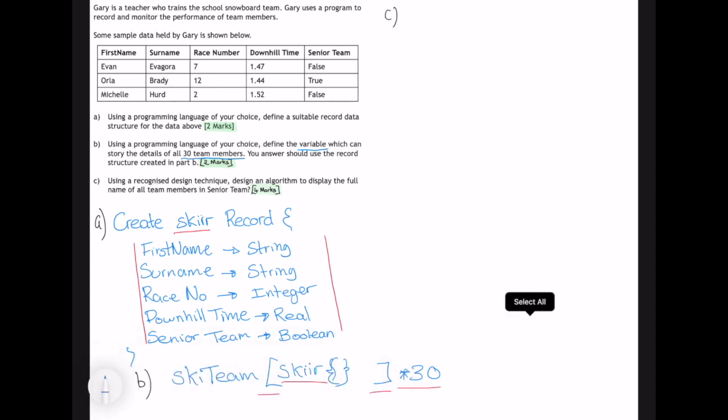Let's now move on to part C. In part C, we have to use a recognized design technique, probably pseudocode, to design an algorithm to display the full name of all team members in the senior team. This is a linear search where we're looking for all the players that are in the senior team. Because we don't know the number of players in the senior team, this is going to have to be a linear search that uses a fixed loop.